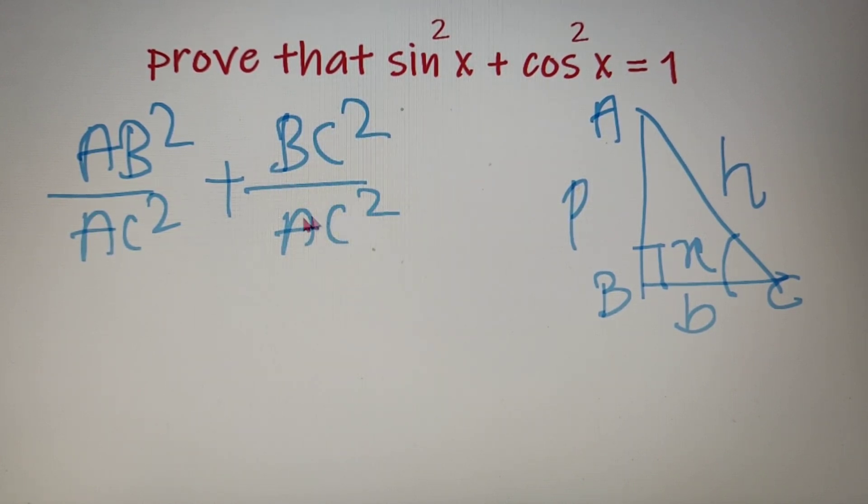Now if I take the LCM of these two fractions I will get AB square plus BC square in the numerator and AC square in the denominator.